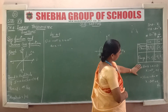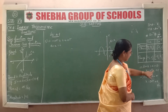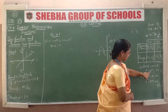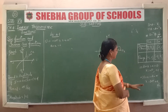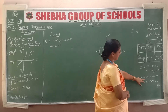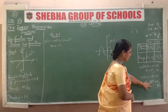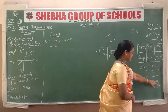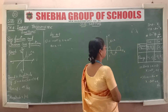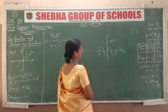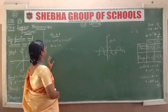As already studied: sin x = sin 0 means x = nπ, where n belongs to integers Z. Also, sin x = sin α means x = 2nπ + α, where n belongs to integers. We will use these formulas.